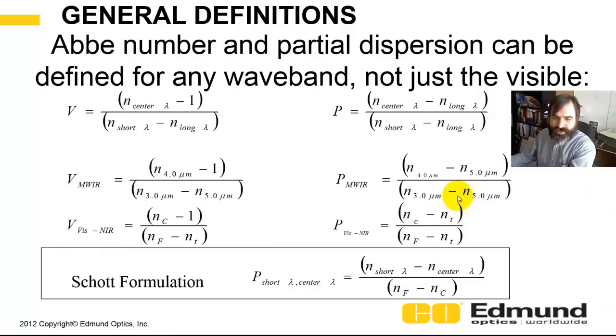Here's the general definitions if you're not in the visible. In general, your Abe, excuse me, your V number, Abe denotes visible, your V number, your center wavelength minus 1, divided by the index at the two wavelength extremes. Likewise, for the partial, it's the center index, the index at the center wavelength, minus the long wavelength index, divided by the delta of those two. And I give the equations for what that would be. It's, say, the mid-wave, and then for the visible to near IR.